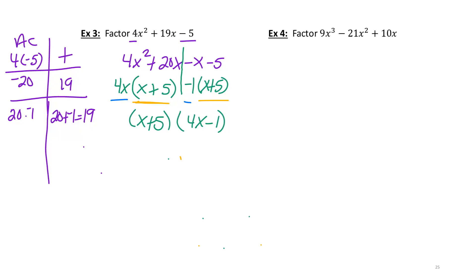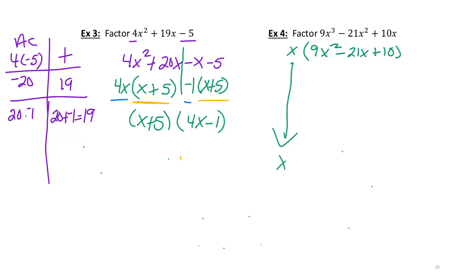Now I'll let you work example 4 and check with the annotated notes posted on Blackboard. I'll give you a head start: begin by factoring out an x to get x times (9x² − 21x + 10). That x on the side just carries through the whole problem, and then you factor 9x² − 21x + 10 using the AC method just like we did on example 3.